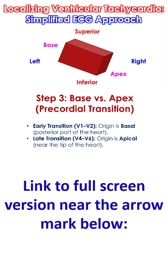Step 3 – Base vs Apex, based on precordial transition. Look at where the QRS flips from mostly negative to mostly positive — that is the transition lead. Early transition in V1 or V2 indicates the origin is in the basal, posterior part of the heart. Late transition in V4 to V6 indicates the origin is apical, near the tip of the heart.